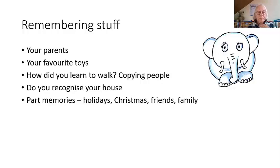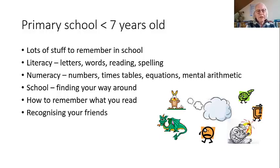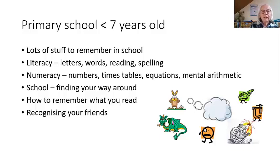To find your way home when you're older, you need to remember where you turn right, turn left, or get off the bus. When you get into primary school there's a lot more stuff to remember. There's literacy, which is about visualizing letters and words for reading and spelling. There's numeracy — visualizing numbers, times tables, equations, mental arithmetic. All of this can happen under the age of seven, so it's really important that parents and teachers know about this.